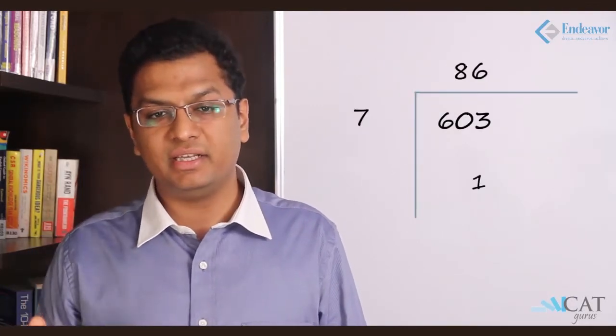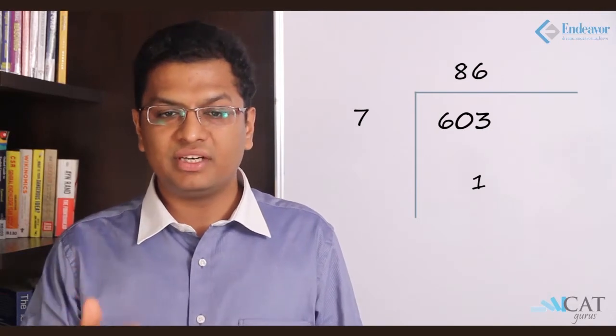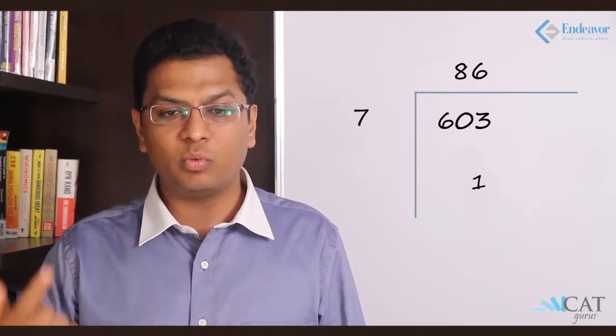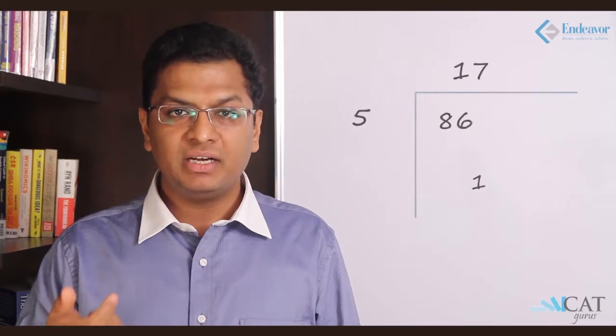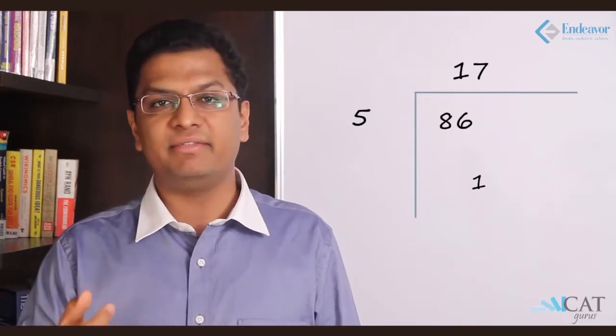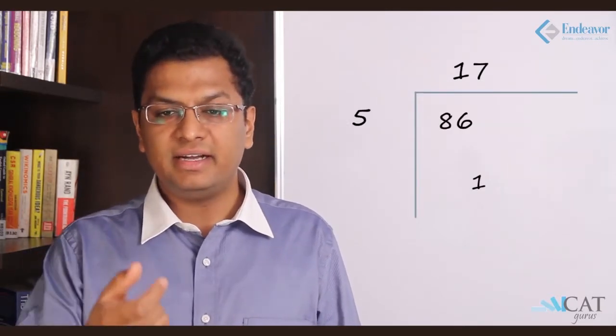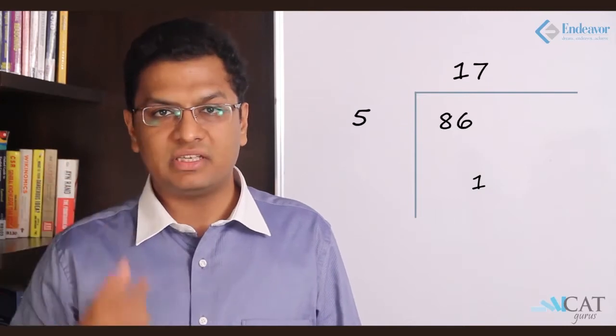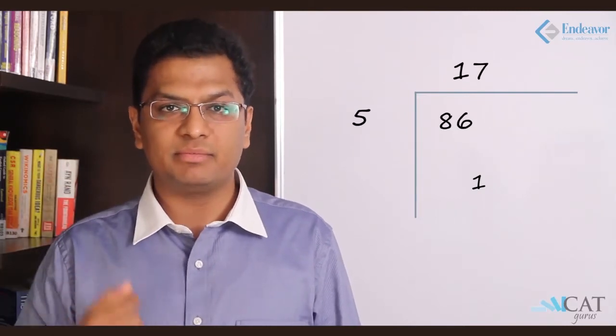Let us divide 603 by 7. So 603 when divided by 7 will give me a remainder 1 and a quotient 86. Let us divide this 86 by 5. 86 divided by 5, 17 becomes the quotient and 1 becomes the remainder. Now the entire process is completed.